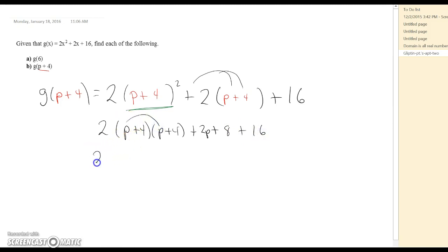Now we're going to FOIL this out. I still need to wait to distribute the 2 in there, so it's going to be P squared plus 4P. And then, another plus 4P. And then 4 times 4 is a positive 16. And then we've got to make sure we recopy all of that.